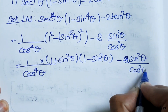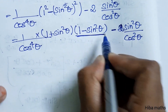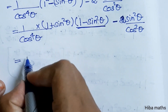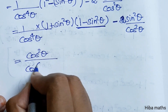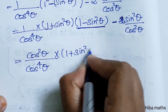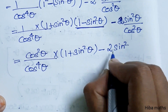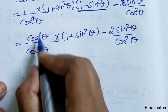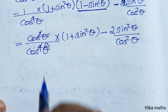In the next line, 1 minus sin²θ equals cos²θ. So we divide by cos⁴θ and multiply by (1 plus sin²θ), minus 2 into sin²θ by cos²θ. The cos terms cancel, giving us the result equal to 1.